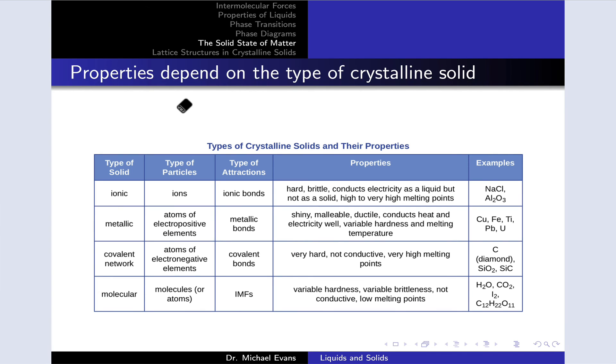And of course, the properties of a solid depend on its type. And this table just summarizes this idea for the four classes of solids we've looked at: ionic, metallic, network covalent, and molecular solids. So the properties differ, and there are a variety of examples listed in the table. I won't go through the examples in too much detail.